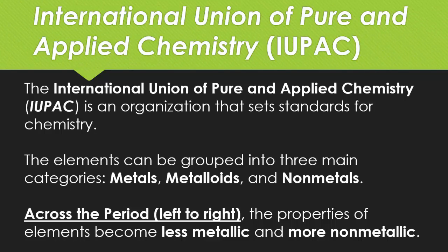Across the periodic table, from left to right, the properties of the elements become less metallic and more nonmetallic. This is why, for example, francium on the far left-hand side is the most metallic, and as you go to the right, fluorine is the most nonmetallic.